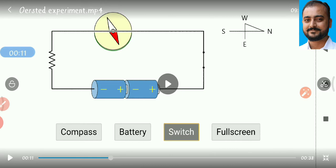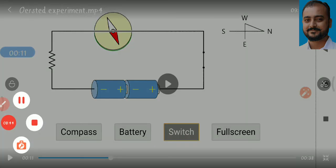The second observation: when the flow of current increases — which we can do by increasing the number of cells connected in series, say from two to four or six cells — more current flows through the conductor. That will show a greater amount of magnetic field produced, meaning the deflection of the compass needle will be maximum. This is the simple experiment performed by Oersted.